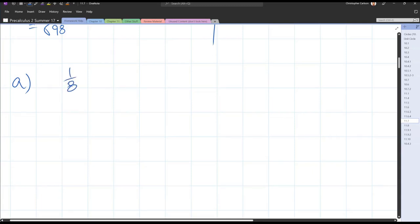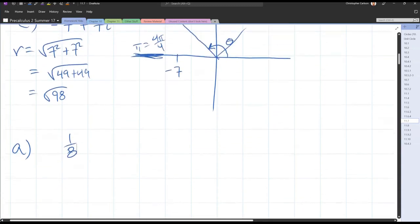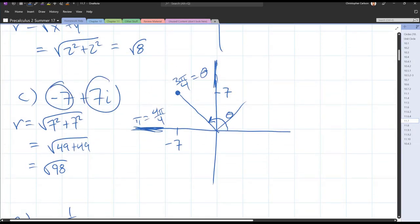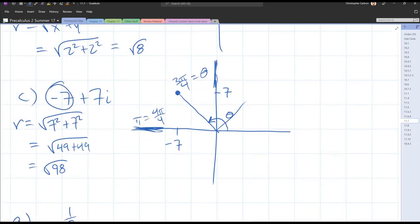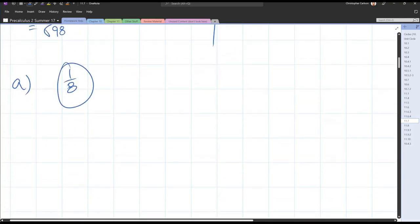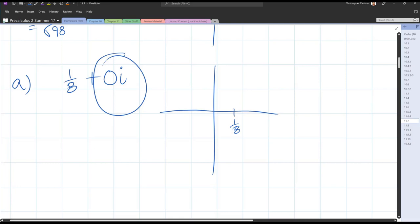Now, this one's a little different. There is no imaginary part. Before we had a real number plus an imaginary number. Here we only have the first part, there's no imaginary. However, we can write plus 0i. Now we graph this. I'm going to go to the right one eighth. The imaginary part is zero, so we're not going up or down anywhere. Our point is right there on the x-axis.